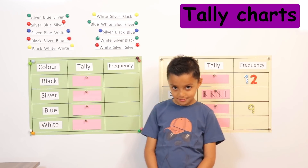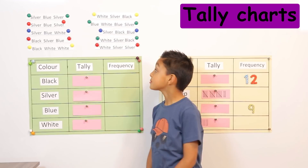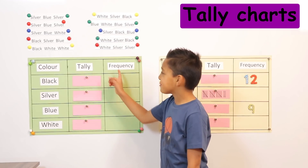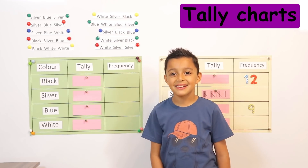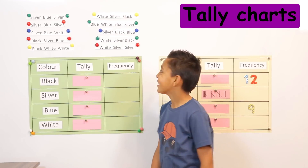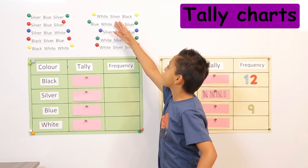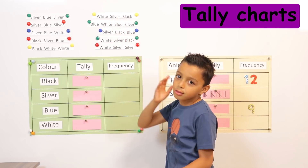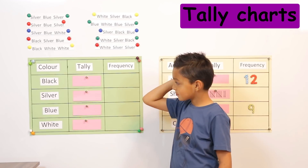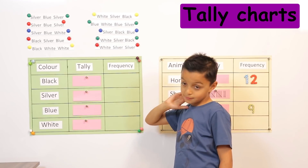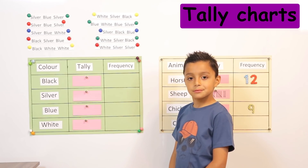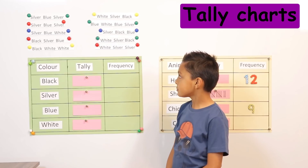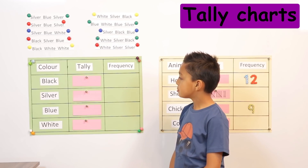So what information do we have in that first tally chart there? Colour, tally, frequency. Okay, so those are the headings — the colours. And all of these are colours of cars. So we took some colours of different cars, and now we're going to show everyone how to fill out the tally chart. Yes, using those.